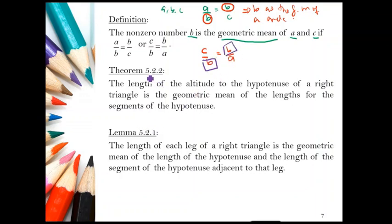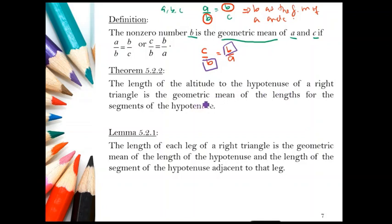Theorem 5.2.2 states that the length of the altitude to the hypotenuse of a right triangle is the geometric mean of the lengths of the segments of the hypotenuse.